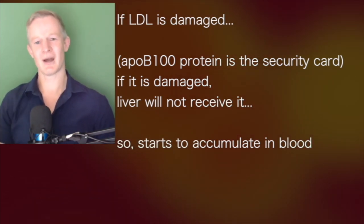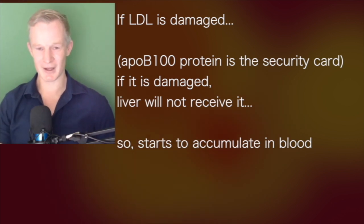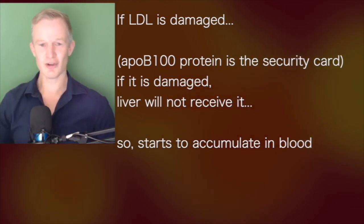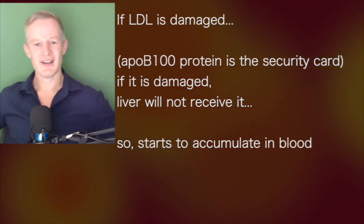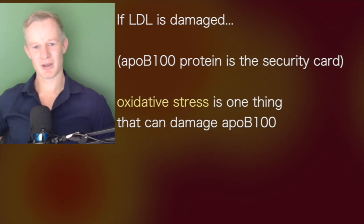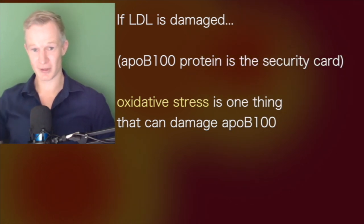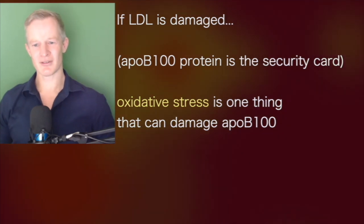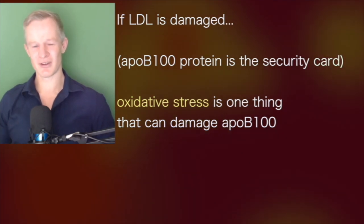APO-B100 is its security swipe card. If you damage that security swipe card, then it can't be taken out of the blood by the liver, and it starts to accumulate. One of the things that can damage this APO-B100 security swipe card is oxidative stress. So it's oxidative stress that turns LDL bad.